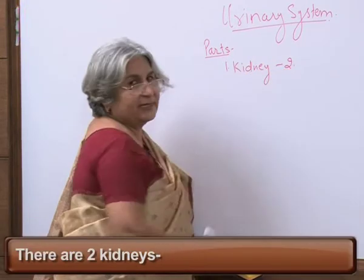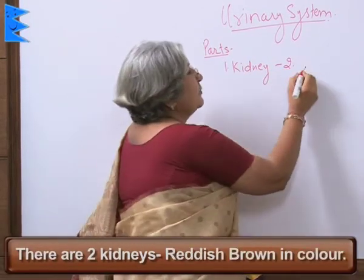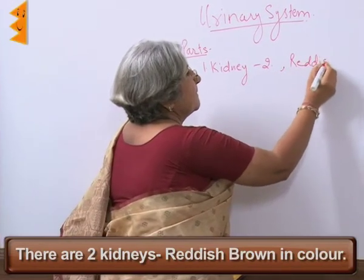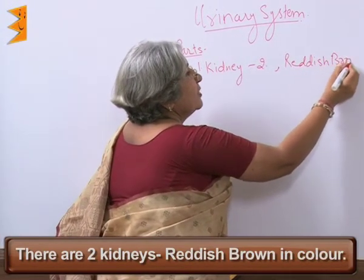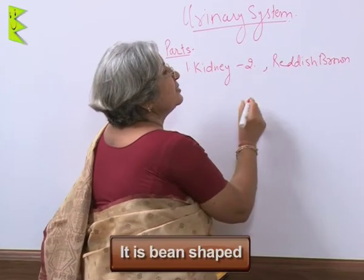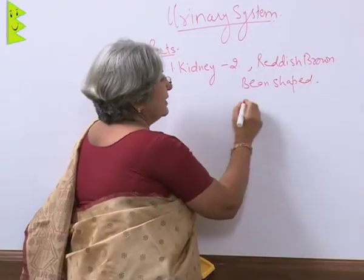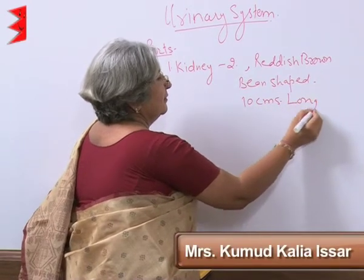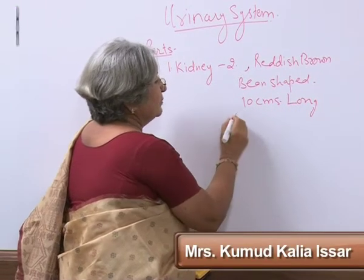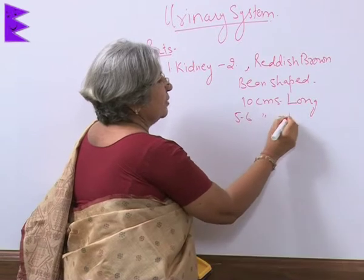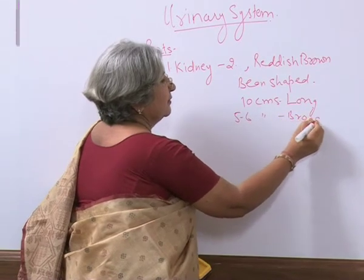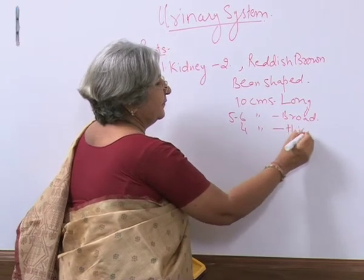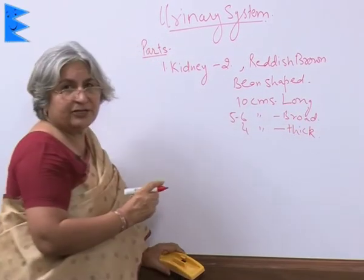There are two kidneys and they are reddish brown in color. Their shape is bean-shaped. They are ten centimeters long, five to six centimeters broad, and about four centimeters thick. What is their location?